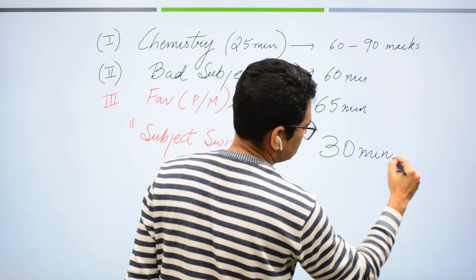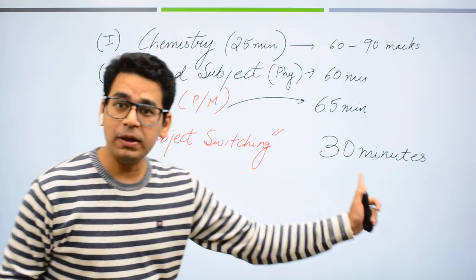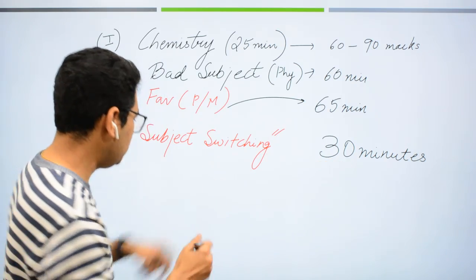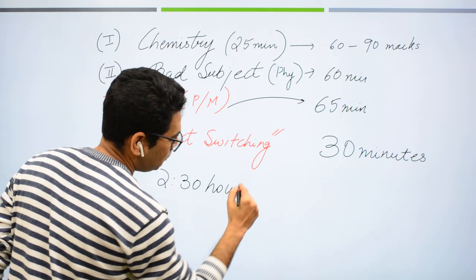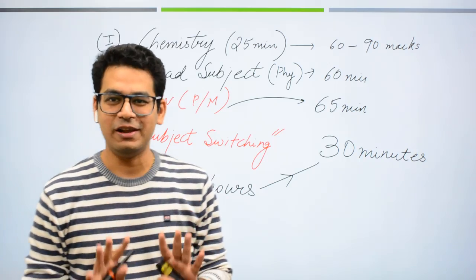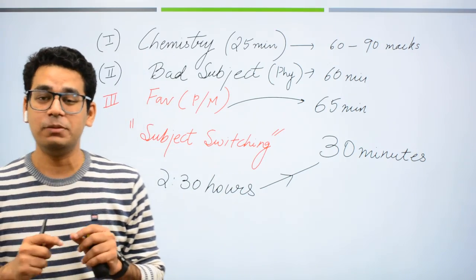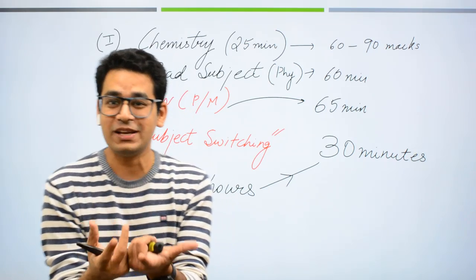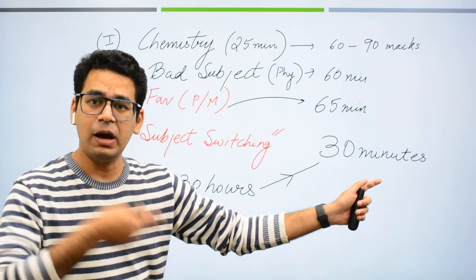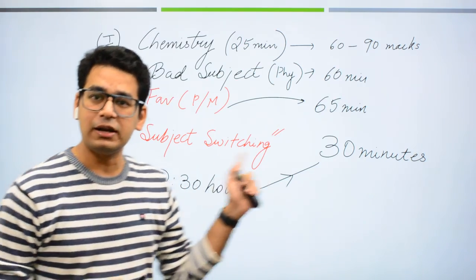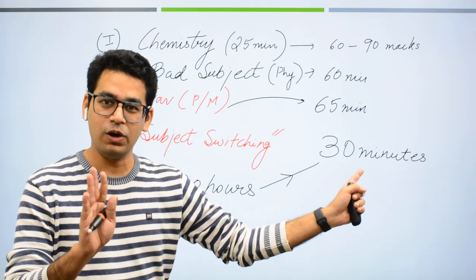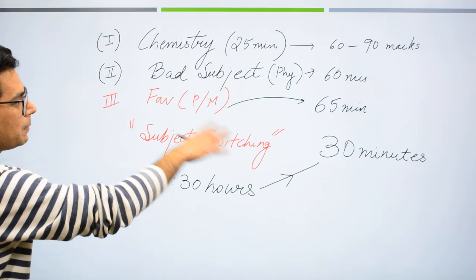Mera strategy hota tha 30 minutes bacha ke rakhna last dunga hamesha. Or ye 30 minutes kya hota, motivation aspect involved hota tha. Ki sir agar mere paas 30 minutes bachaye hain, aur mera paper abhi 2 and a half hours mein, 2 hours 30 minutes have expired, aur abhi bhi mera paper mera expectation ke hisab se achha nahi hua hai, tab bhi mere paas ek motivational factor hai. I still have got 30 minutes, all is well. Hume all is well wala funda hamesha dimag mein lagai rakhna hai.